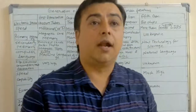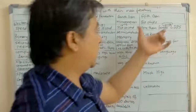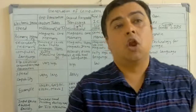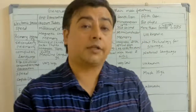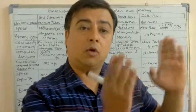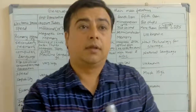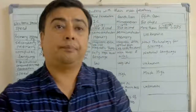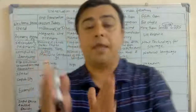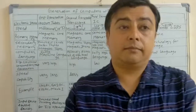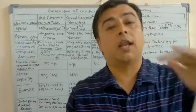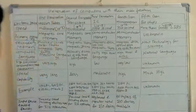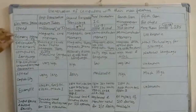In the fifth generation, femtosecond or LIPS will be used. LIPS means Logical Inference Per Second — logical inference per second will be used in the fifth generation of computers.